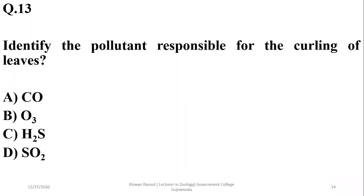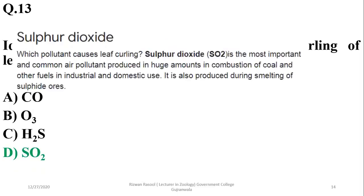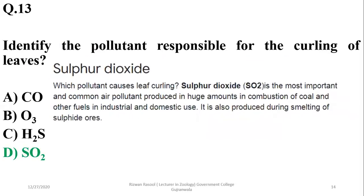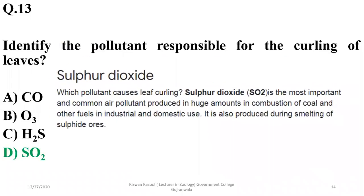Question 12: Identify the pollutant responsible for the curling of leaves. It is sulfur dioxide gas, which is considered the most common air pollutant, and it causes leaf curling. So the answer is delta.